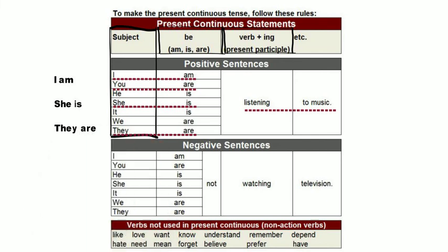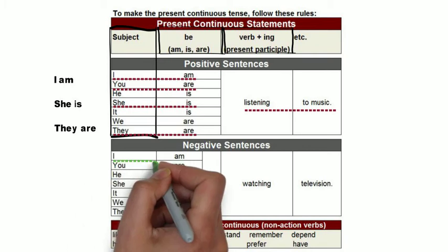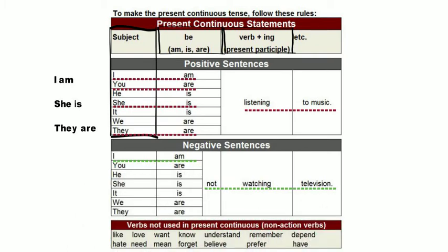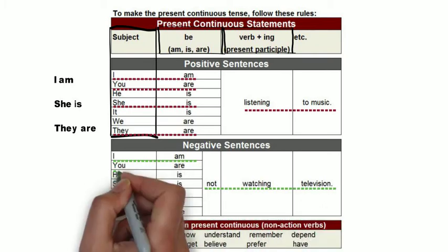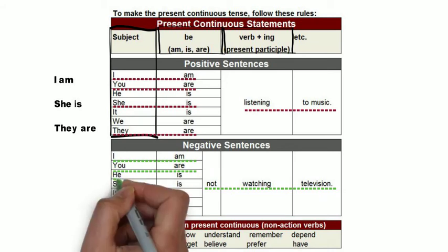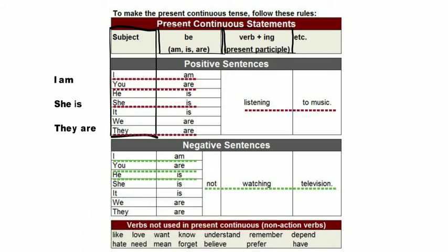We can also make negative sentences like: I am not watching television, you are not watching television, he is not watching television, and so on.